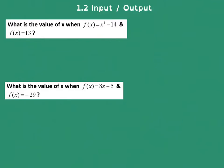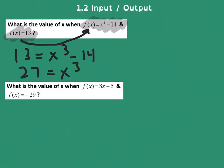So this actually, in this case, is not an input question. This is an output question. They're giving you what f of x is. Notice how this will set up a little bit differently. I'm going to write 13 equals x cubed minus 14. Move the 14 over, and I get x cubed equals 27. This becomes x equals 3 as an answer.